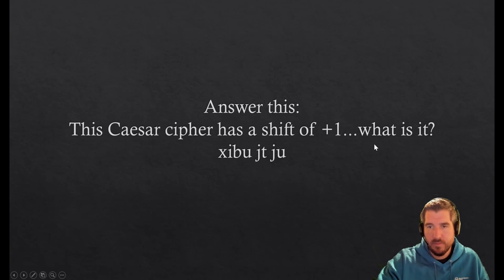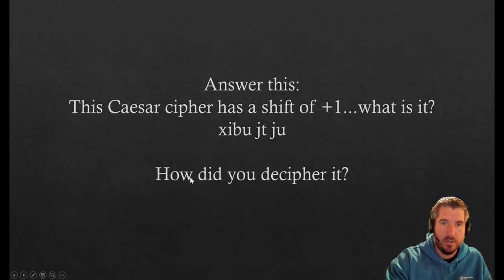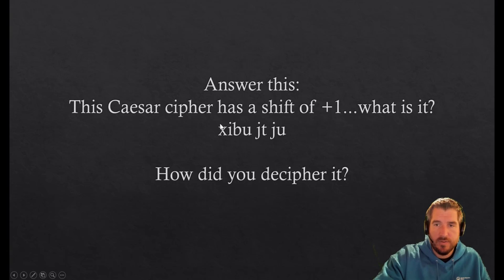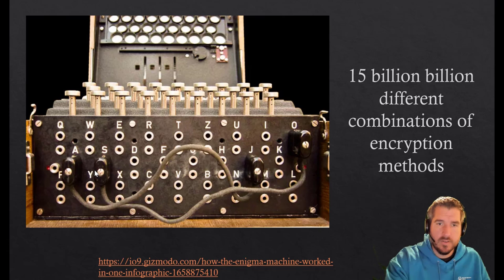So how did you decipher it? You went minus one, right? Okay, so that's an example of a cipher. This is another pretty complex example—this is called the Enigma box. The Germans used this in World War II.